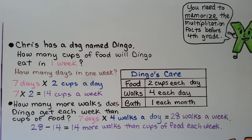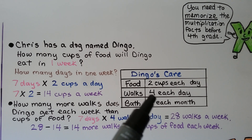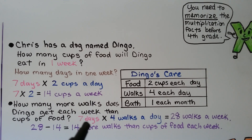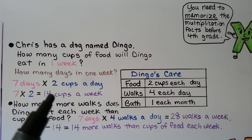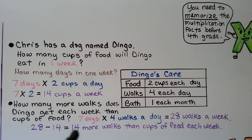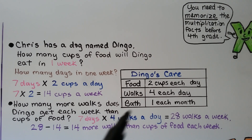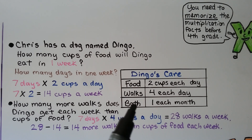How many more walks does Dingo get each week than cups of food? He gets 4 walks each day and 2 cups each day of food. 7 days times 4 walks a day is 28 walks in 1 week. We know he gets 14 cups in a week. We do 28 minus 14, and he gets 14 more walks than cups of food each week. Do you see the unnecessary information in this frequency table? We didn't need to know about bath — it wasn't even in the problem. Sometimes word problems will have unnecessary information.